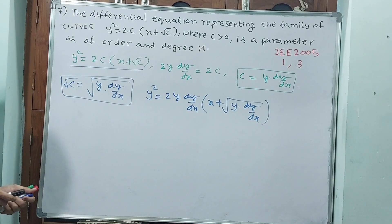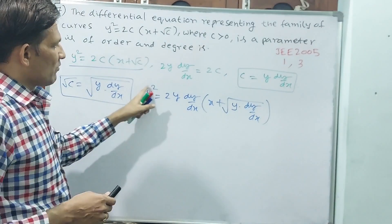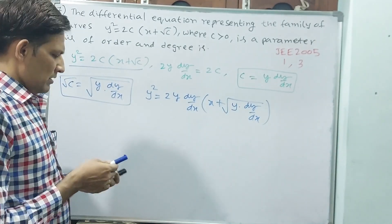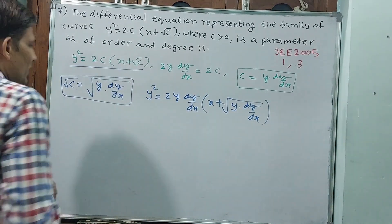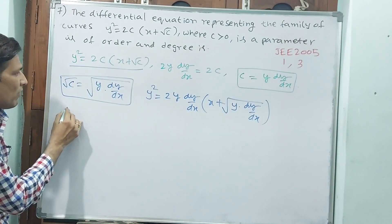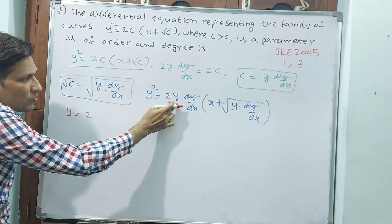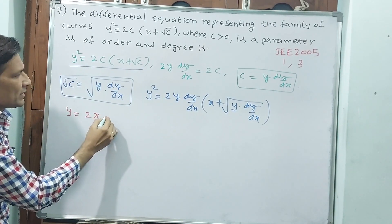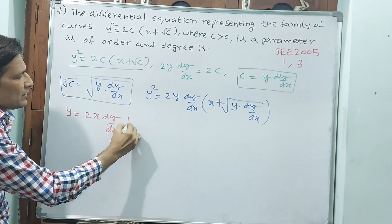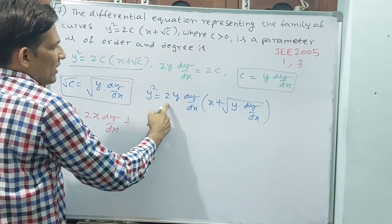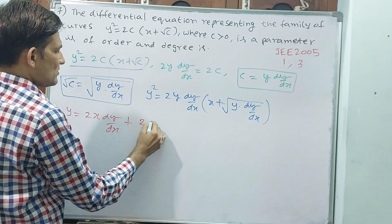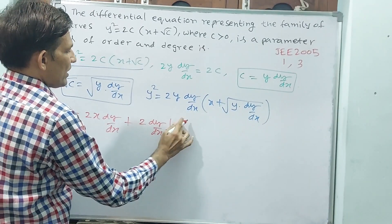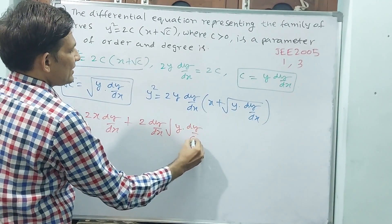So I cancel this y. If I cancel y, then y = 2·dy/dx inside: y = 2x·dy/dx + 2·dy/dx·√(y·dy/dx).